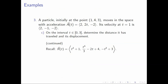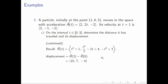For the displacement, we compute r(3) - r(0). At t=3: the first component is 9 + 1 = 10, the second is 27/3 - 6 + 4 = 9 - 6 + 4 = 7, and the third is -9 + 3 = -6. So r(3) = (10, 7, -6). And r(0) = (1, 4, 3). The displacement vector is r(3) - r(0) = (9, 3, -9). This is the displacement of the particle from t=0 to t=3.